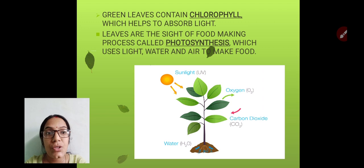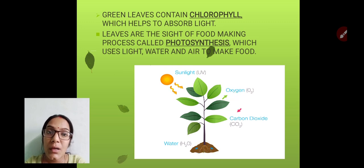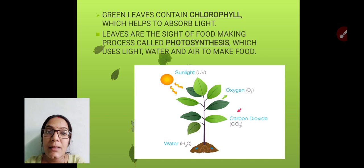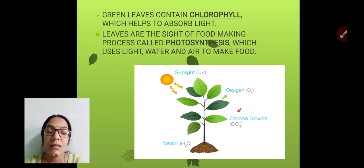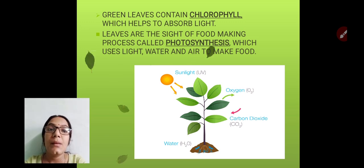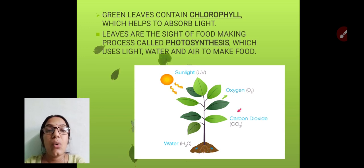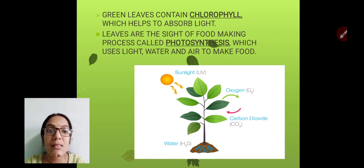Green leaves contain chlorophyll, which helps to absorb light. Chlorophyll is a pigment present in the leaves that helps the leaves to absorb light. You may ask why plants need sunlight — plants need sunlight to prepare their own food by the process of photosynthesis.